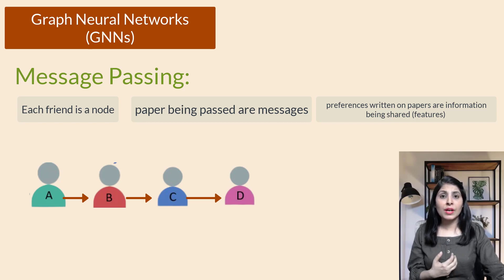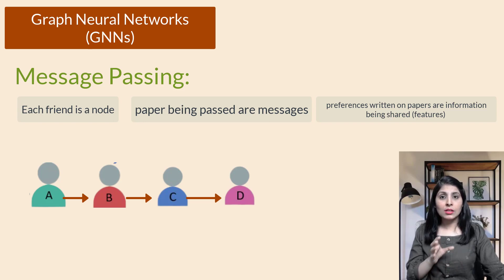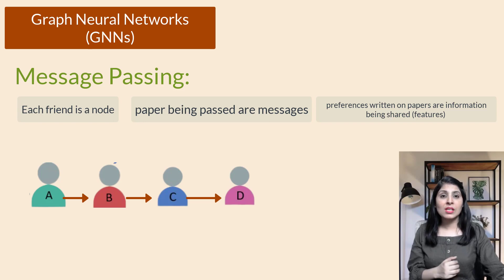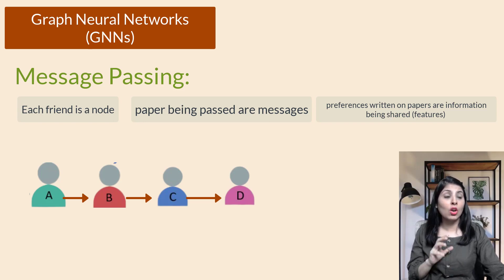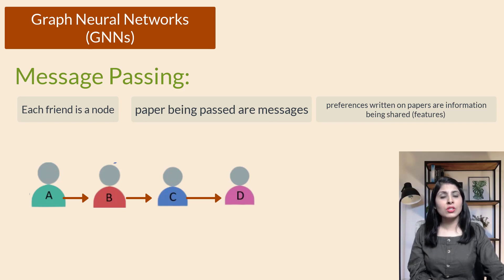In the trip planning context, the messages contain information about each friend's preferences such as favorite activities, desired climate, or budget constraints. By passing and updating these preferences through message passing, a collective decision can be made on the aggregate information. In summary, message passing in GNNs is a way for nodes to exchange and update information within a graph structure, enabling collective computations and predictions based on shared knowledge.